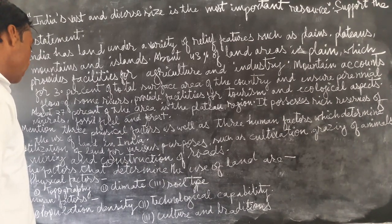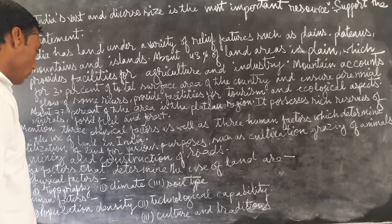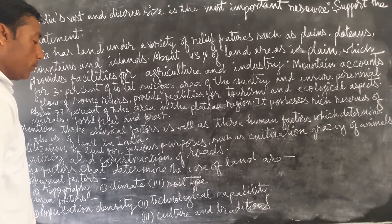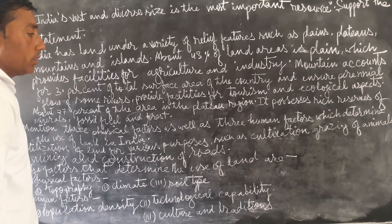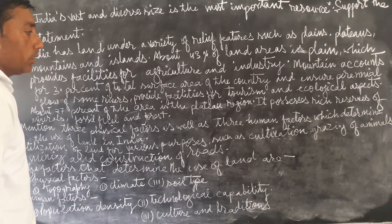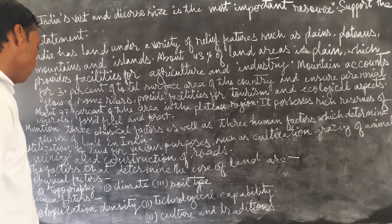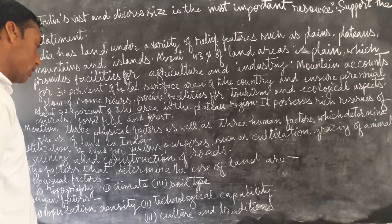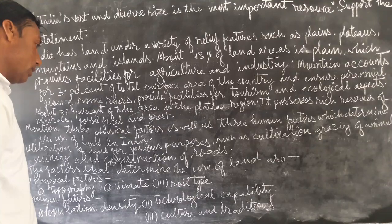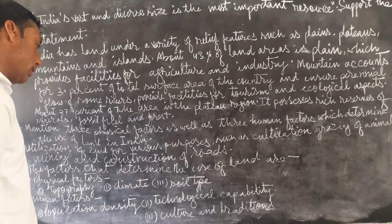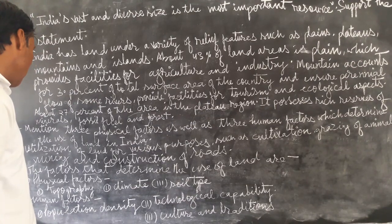Utilization of land involves various activities such as cultivation, grazing of animals, mining, and construction of roads. The factors that determine the use of land are physical and human factors.